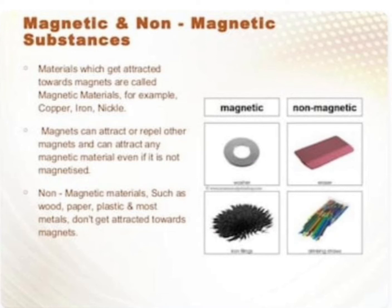Magnetic and non-magnetic materials. Beta, magnetic substances क्या होते हैं? Magnetic materials are the materials which get attracted towards the magnets. जो magnet की तरफ attract हो जाते हैं वो magnetic materials होते हैं। For example, copper, iron, nickel.